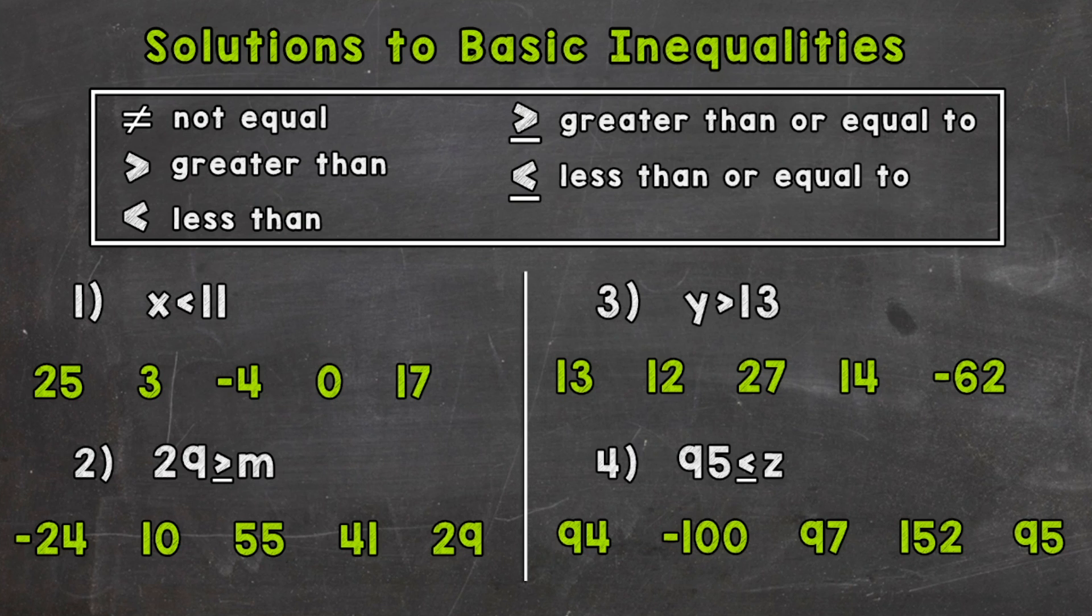So any number less than 11 would make this inequality true. We'll start with 25. So 25 is not less than 11. So if we plug that in for x, 25 is less than 11. Well, that's not true. So that would not be a correct solution. Now, 3, that's less than 11.